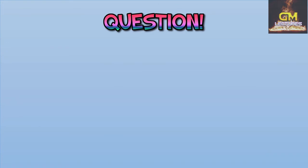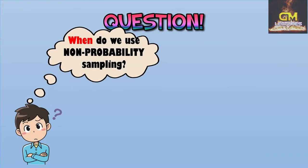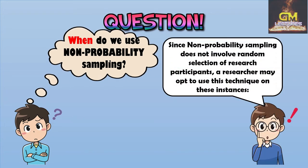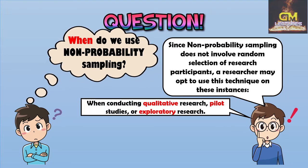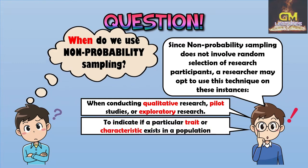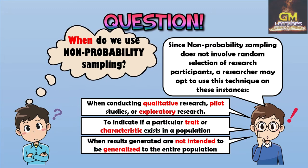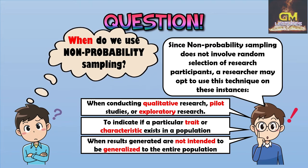But first, let's answer this question: when do we use non-probability sampling? Since non-probability sampling does not involve random selection of research participants, a researcher may opt to use this technique in these instances: first, when conducting qualitative research, pilot studies, or exploratory research; next, to indicate if a particular trait or characteristic exists in a particular population; and lastly, when results generated are not intended to be generalized to the entire population — meaning the results are only specific to that particular group of people.